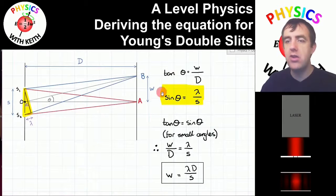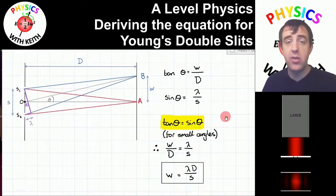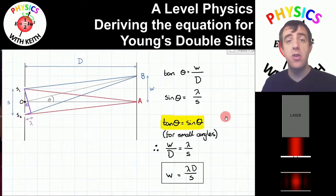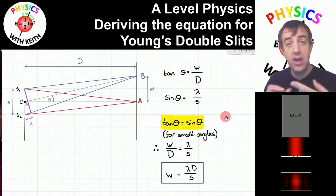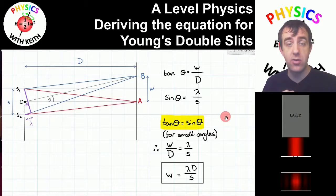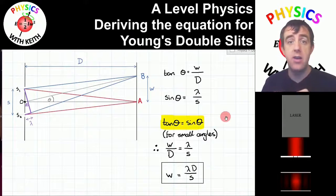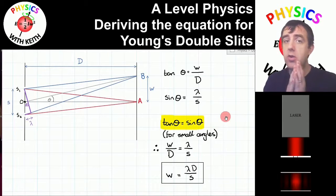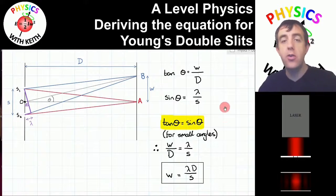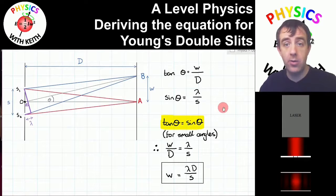So we have tan theta from the first triangle and sine theta from the second. At very small angles, tan theta equals sine theta. If you don't believe me, grab a calculator: take the sine of one degree then take the arc tan of that — you get something very close to one degree. Or take the tan of two degrees and take the arc sine — you get something very close to two degrees. The smaller the angle, the closer tan theta becomes to sine theta. This is what we call the small angle approximation.